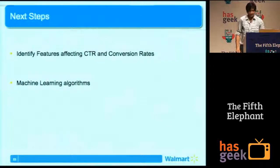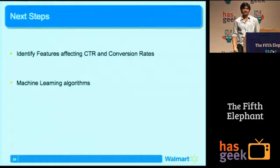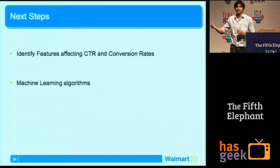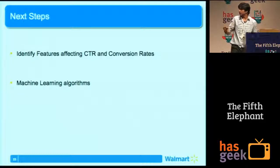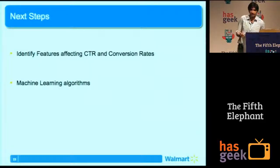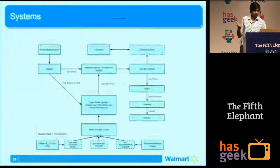Some of our next steps are to identify more features to help identify if a user in a certain bucket tends to click more or convert more. Right now we only have a basic statistical model, but we're looking forward to trying out many machine learning algorithms which might help us improve our performance.